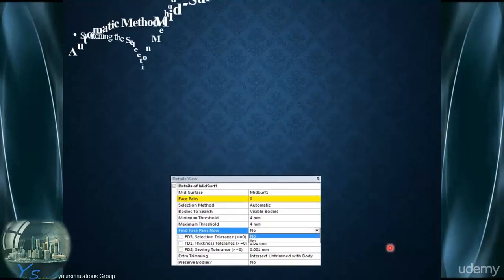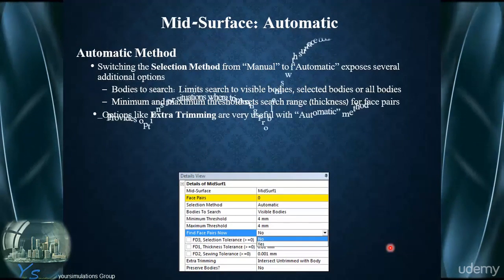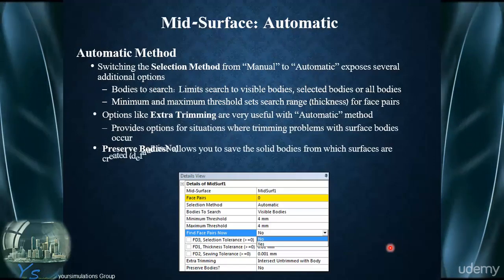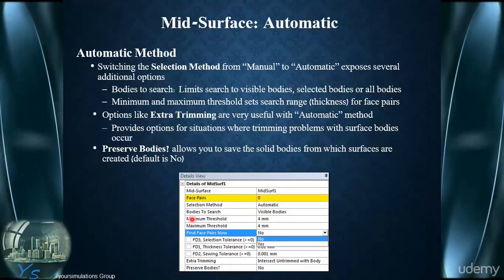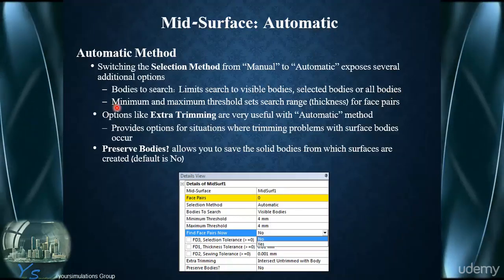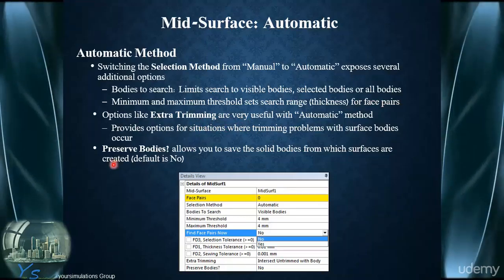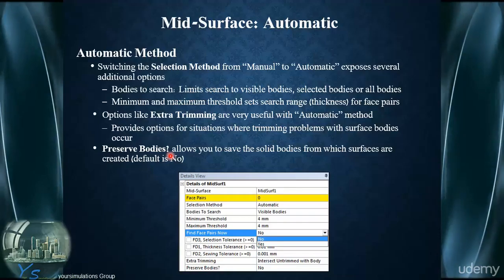We can also opt for an automatic selection method for mid-surfacing pairs, which brings some additional options for creation of the mid-surface. It gives us an option to search for bodies — limiting the search to visible bodies, selected bodies, or having all bodies included for mid-surfacing. It also allows definition of minimum and maximum threshold sets for the search range for face pairs. There are options for trimming, and also an option to preserve bodies, which will allow you to preserve the pre-existing solid from which the mid-surface body was created.